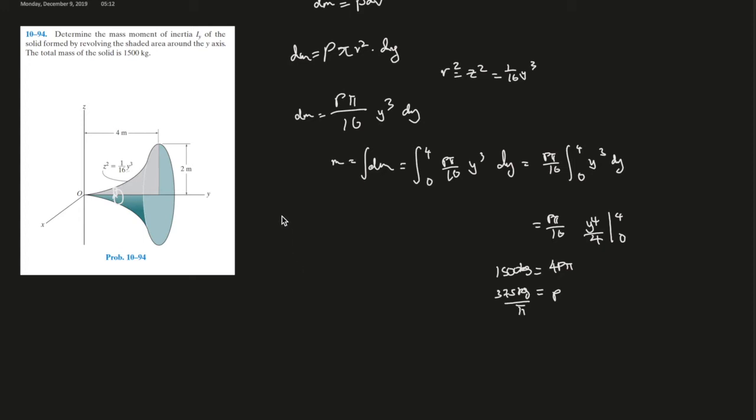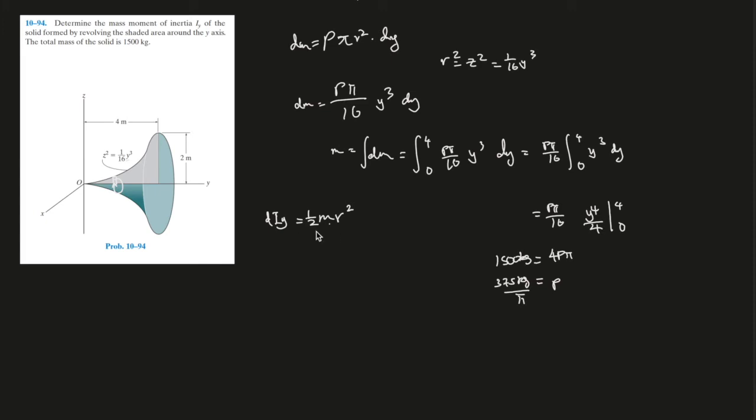Moment of inertia. And for this, the difference around the y-axis is dI_y, right? dI_y equals 1 half times the mass times r squared. And this is just, like you memorize, like there's a formula sheet. I hope your professor gives this to you, right?